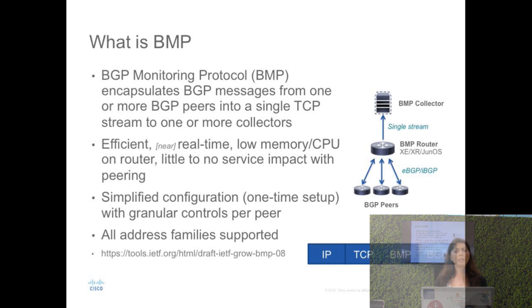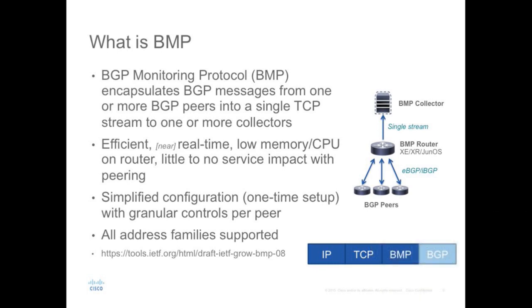In a nutshell, BMP is a way for BGP messages to be streamed over a TCP session to a collector. You have your router with BMP enabled, it has BGP peers, and once BMP is enabled it sends every packet it receives from those peers to a server. It's non-intrusive, it's not part of your BGP mesh, and it supports all address families.